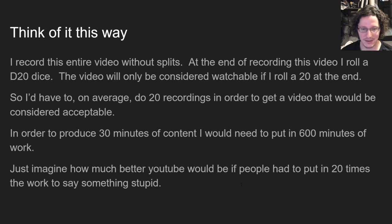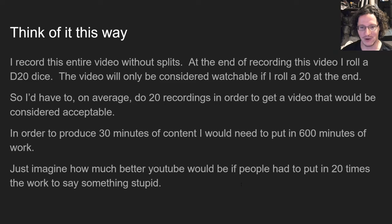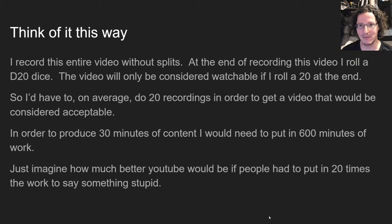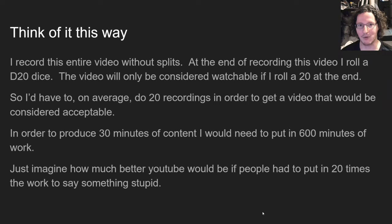To put it another way: let's say I record this entire video without splits, and at the end I roll a d20. It will only be considered a successful video if I roll a 20, so I'd have to do on average 20 recordings to get an acceptable take — a 20-fold increase in the time to produce one successful take. If we put this requirement on every YouTuber, and a person wanted to make a 10-minute video, they'd have to do 200 minutes of recording to get one successful take. Functionally you can only produce about 1/20th of a day's worth of content every day, so a person couldn't put out more than about an hour and a half of content per day.